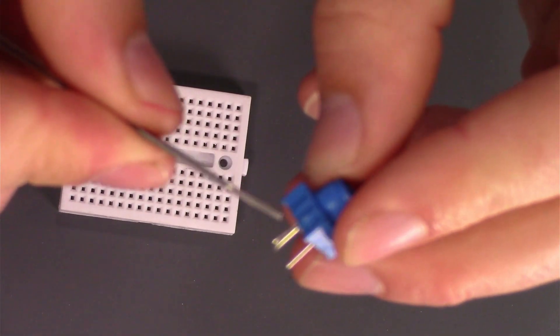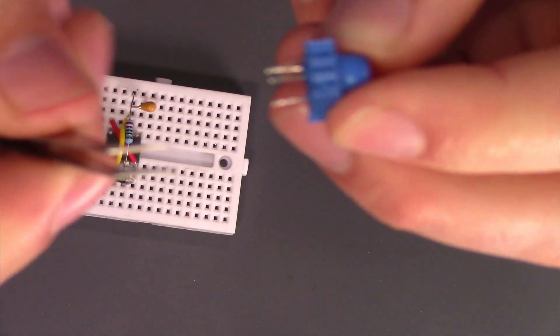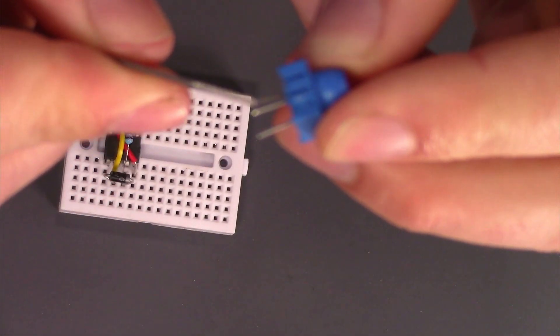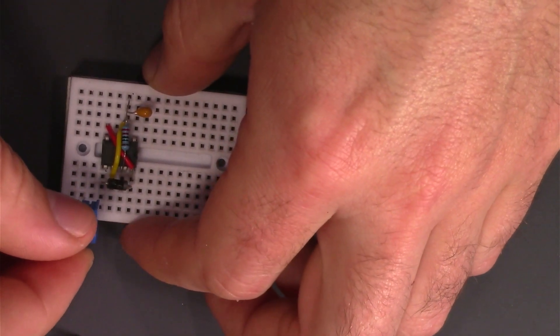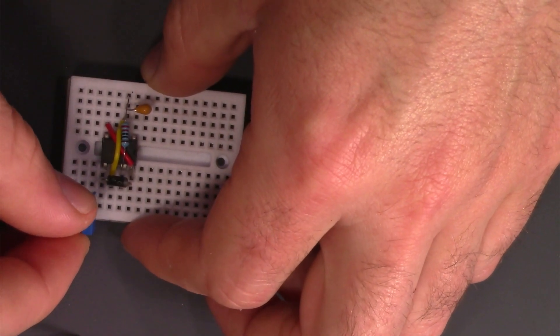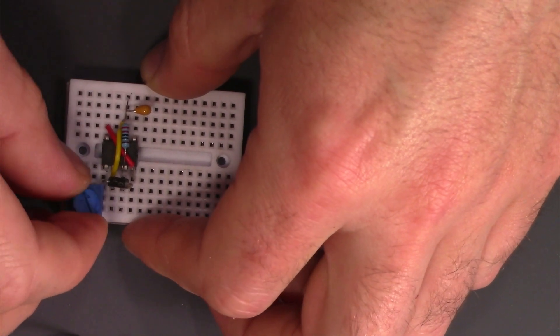This is a potentiometer. They come in all shapes and sizes. This one is pretty simple. It has three leads: power, the signal output, and ground. One of the sides will indicate where the face of the potentiometer is. I need to plug it into a row without anything else on it. I'll put it here.